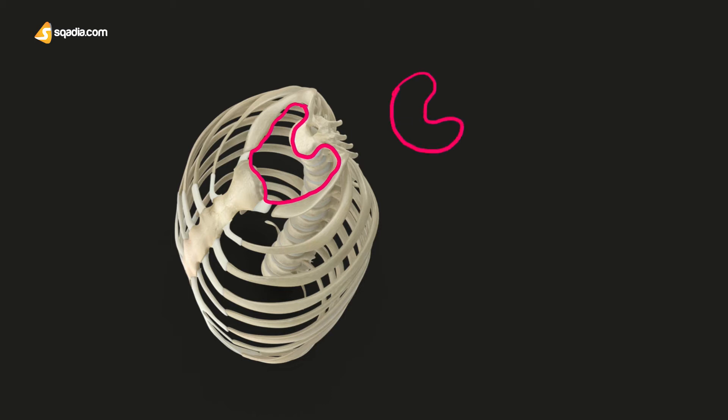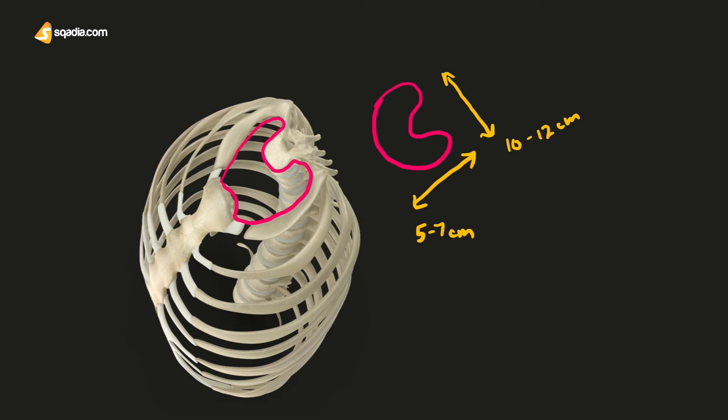The anteroposterior diameter is about 5 to 7 centimeters, and the lateral diameter may be 10 to 12 centimeters. So let's now talk about the boundaries.